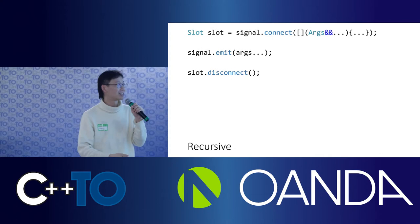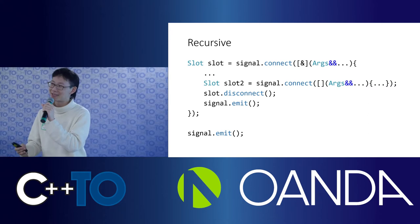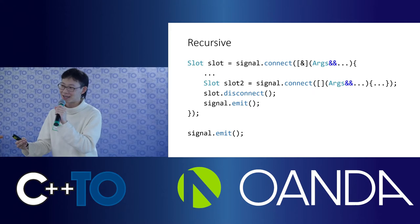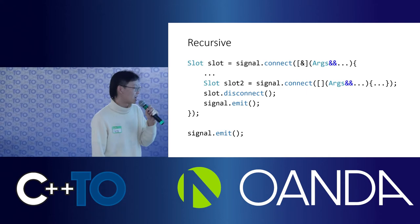To go over some nastier things — can you disconnect yourself inside the callback itself? For example, I want to register an event callback: if the mouse clicks, first do something and then remove this callback, so it only fires on the first mouse click event. This characteristic we call recursive. That's basically everything about signal slots.